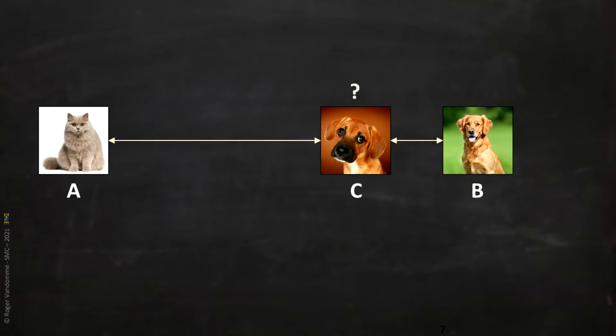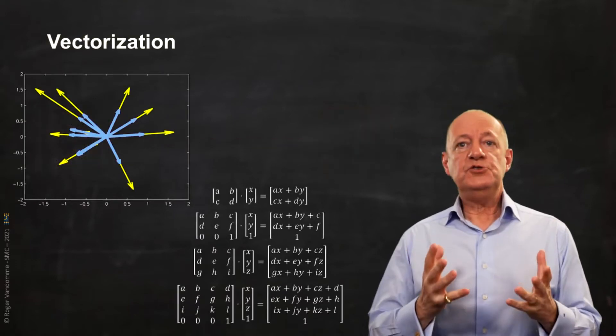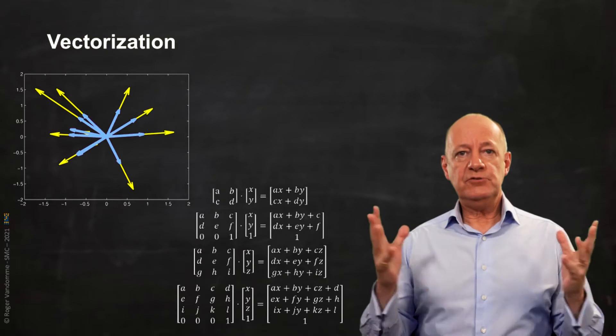If C is closer to B, I will conclude that it probably belongs to the same class as B.